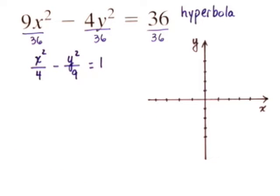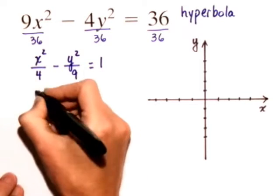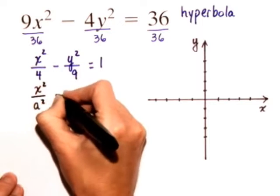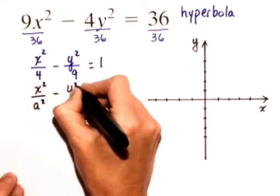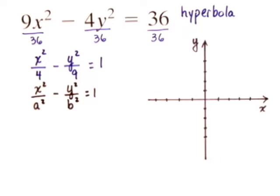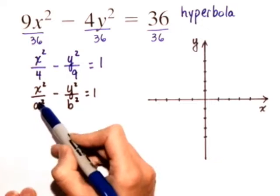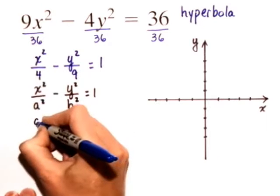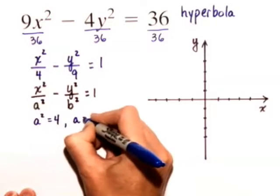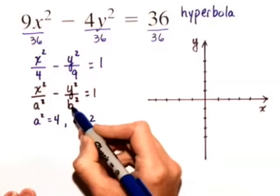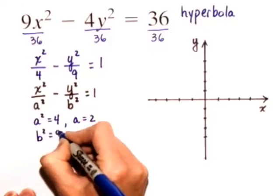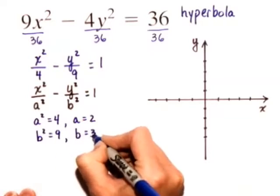This is in standard form because it's of the form x squared over a squared minus y squared over b squared is equal to 1. We can see that a squared is equal to 4, so that means that a is equal to 2, and also b squared equals 9, so that b is equal to 3.